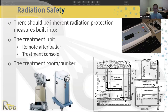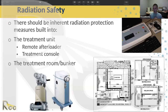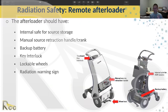You should have a door interlock that won't allow you to treat when it's open. The console should have interlocks. In the United States, we have an interlock that allows only one type of radiation-producing device at a time. The afterloader should have an internal safe for storage, a manual source retraction mechanism — you should be trained thoroughly on how to use that manual source retraction handle in case the source is out and stuck.